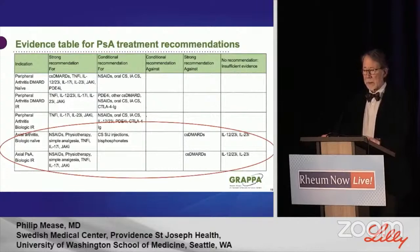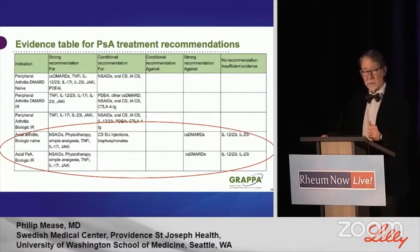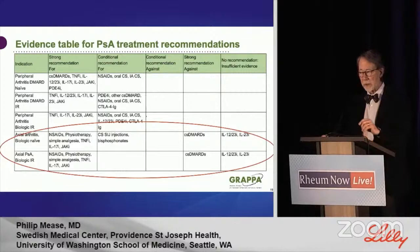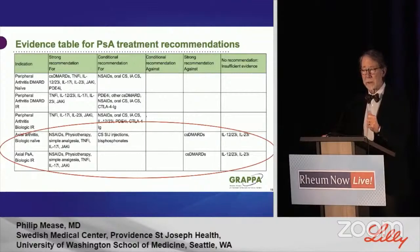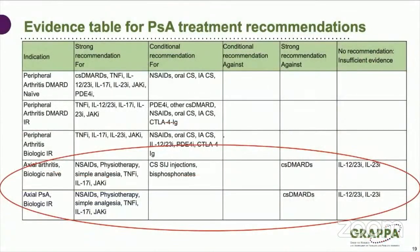Here is the evidence — the 2021 treatment recommendations from the GRAPPA group, focusing on the axial arthritis aspect. It's divided into biologic-naive or biologic-experienced. In the first box are all the different approaches with shown efficacy in at least ankylosing spondylitis trials: NSAIDs, physiotherapy, simple analgesia, TNF inhibitors, IL-17 inhibitors, and JAK inhibitors. That supports the choices just made. For biologic inadequate responders, there's a strong recommendation against csDMARDs such as methotrexate or sulfasalazine in spinal disease.